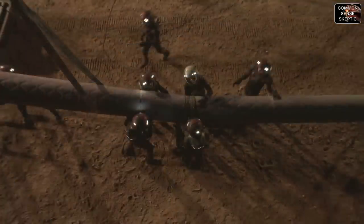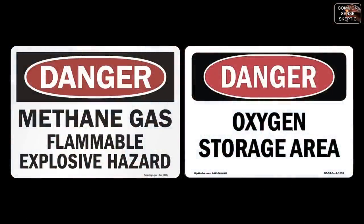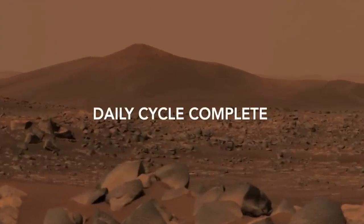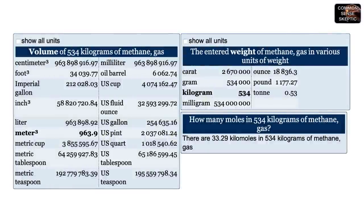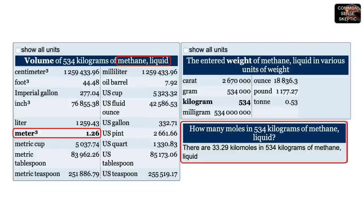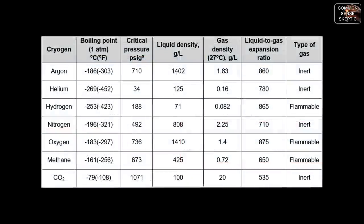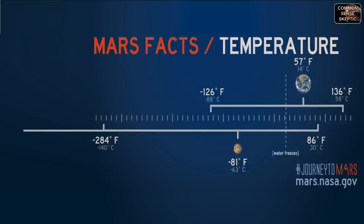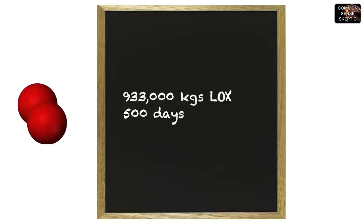Once the daily cycle has run its course, colonists will have to deal with the end products: refined methane and oxygen gases. At one standard atmosphere at room temperature, 534 kilograms of methane gas has an uncompressed volume of 963.9 cubic meters. As a liquid it only occupies 1.26 cubic meters, but cryogenic methane must be kept chilled at minus 161 degrees Celsius — around 100 degrees colder than the average temperature on Mars.